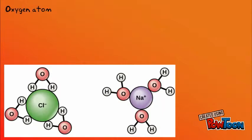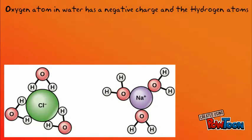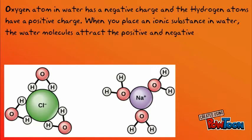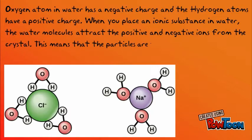The oxygen atom in water has a negative charge and the hydrogen atoms have a positive charge. When you place an ionic substance in water, the water molecules attract the positive and negative ions from the crystal. This means that particles are free to move around the solution.